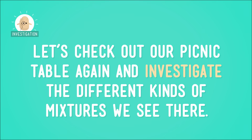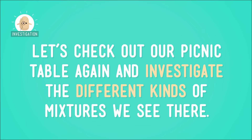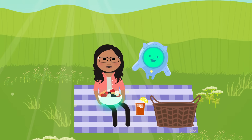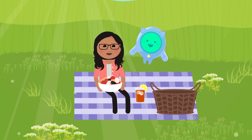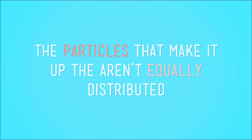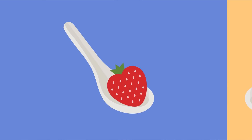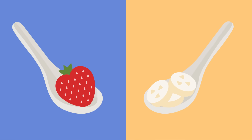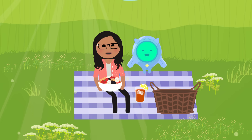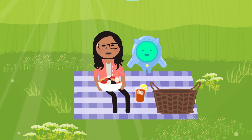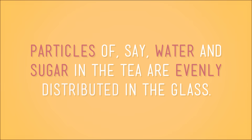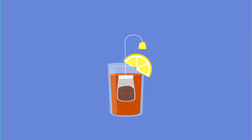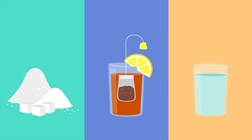Let's check out our picnic table again and investigate the different kinds of mixtures we see there. Let's start with the fruit salad — that's definitely a mixture of different kinds of fruit. Is it a solution? Nope, because the particles that make it up aren't equally distributed. I can dip my spoon in there and come up with nothing but strawberries one time, and then go back for more and get a spoonful of only bananas. How about the sweet tea? The solution to that question is that it's a solution! Particles of water and sugar in the tea are evenly distributed in the glass — every bit contains water and sugar, spread out evenly.